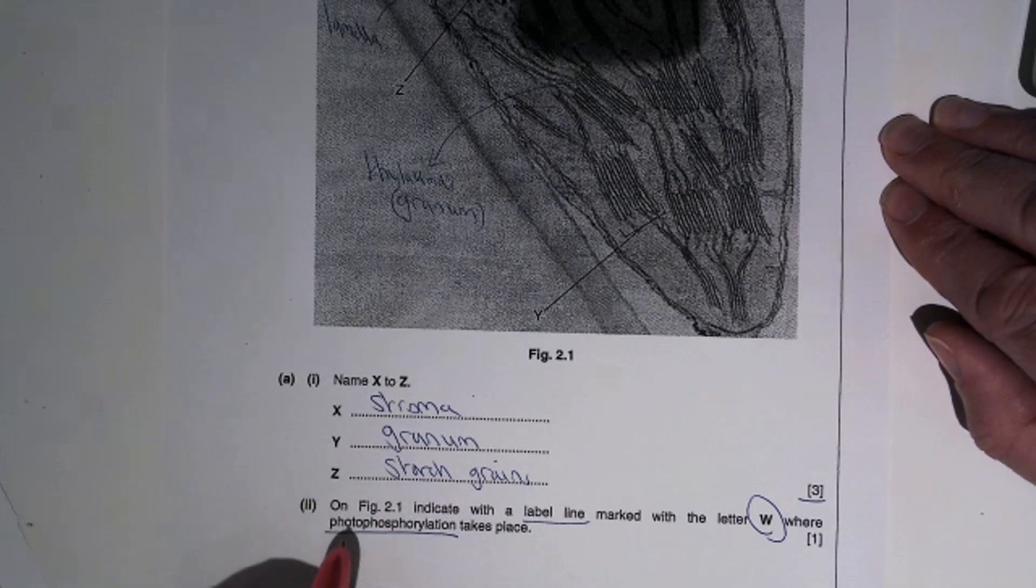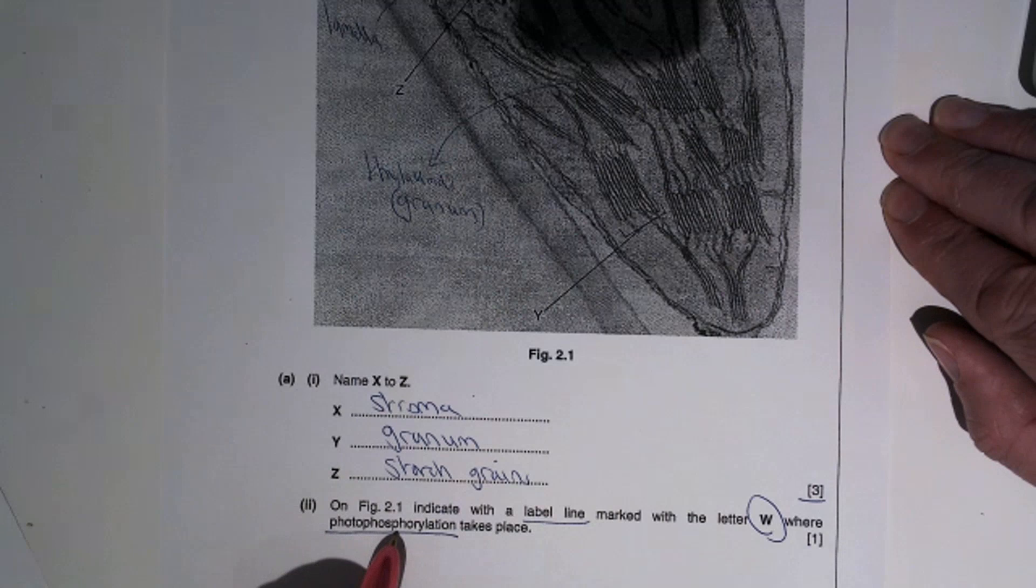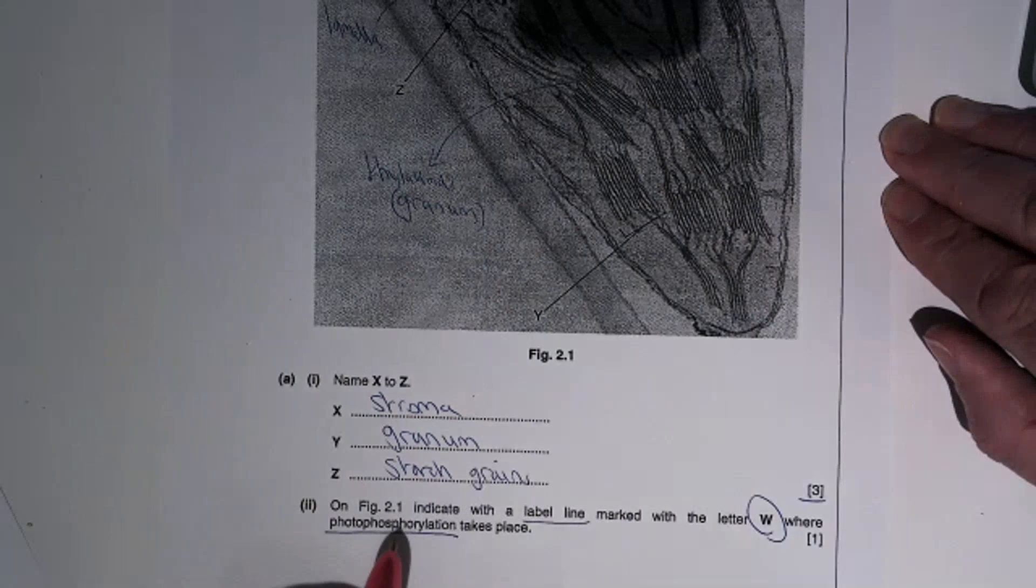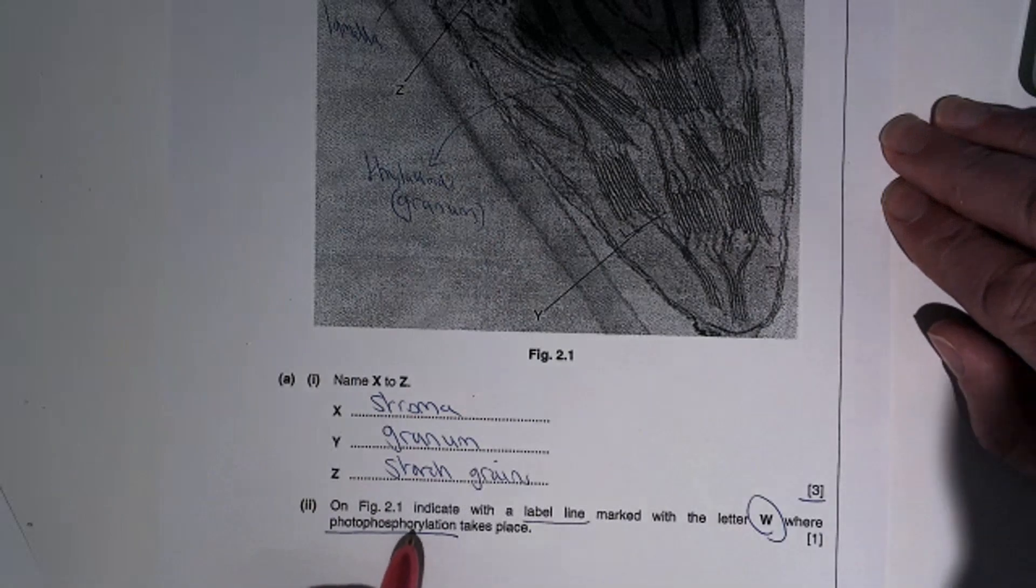Photo means light. Phosphorylation is using light to produce ATP.